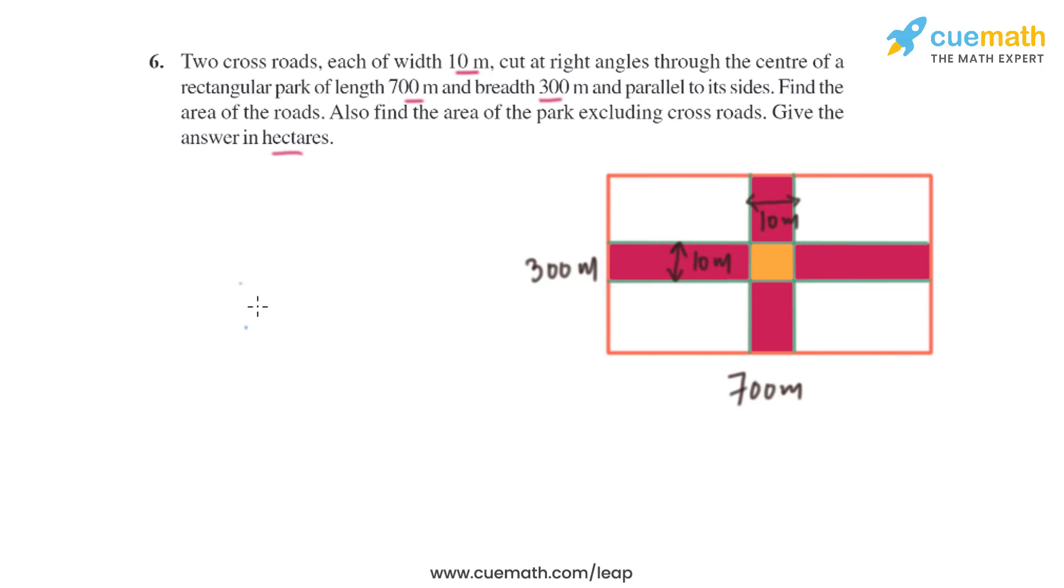We can find the area of the crossroads easily as they are rectangular in shape. The area of a rectangle is length times breadth. If we look at the horizontal crossroad, there is a yellow portion, and the vertical crossroad also has that yellow portion. This area appears in both roads, horizontal and vertical, so we will subtract this overlap.